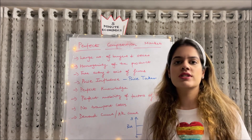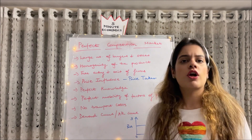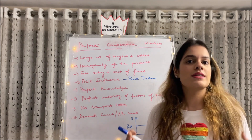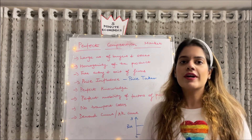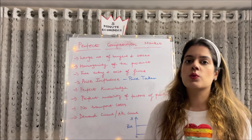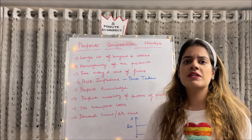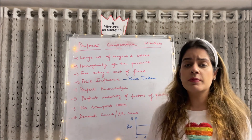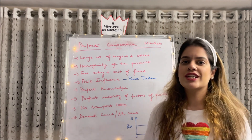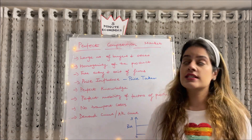Next is perfect knowledge — this is also a very rare assumption. All buyers and sellers know exactly what's happening in the market: what price is being set, what product is being sold. Next is perfect mobility of factors of production, which means labor is perfectly mobile and can switch from one job to another quite easily.